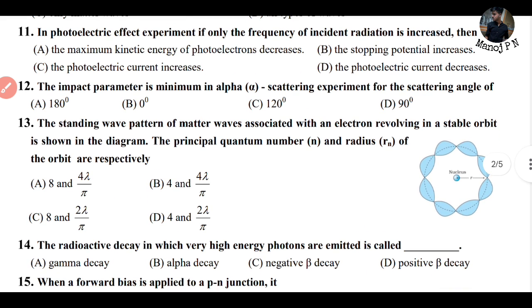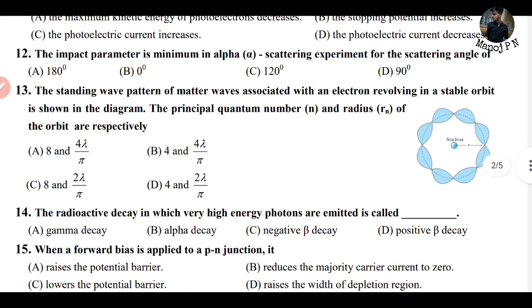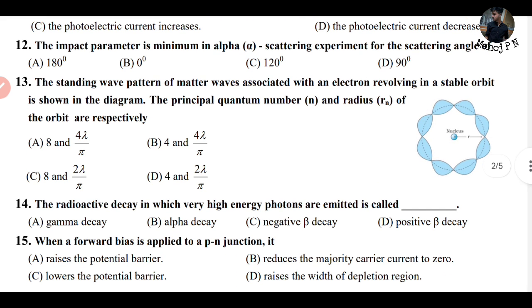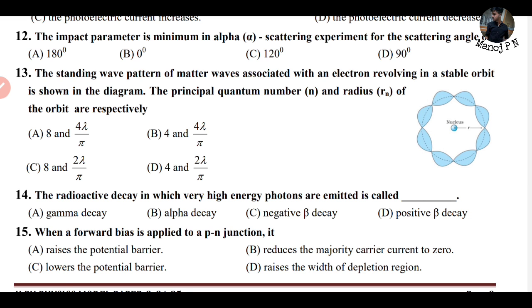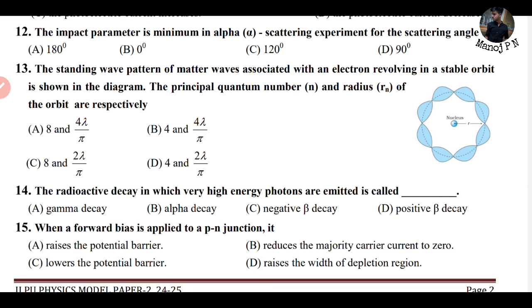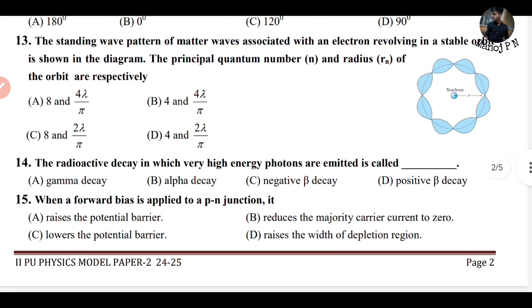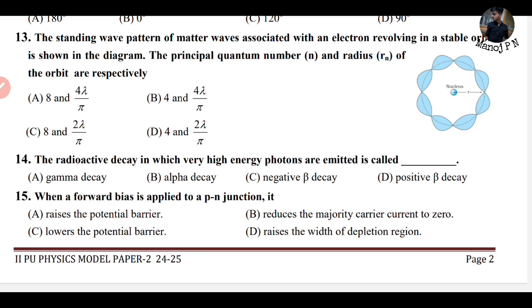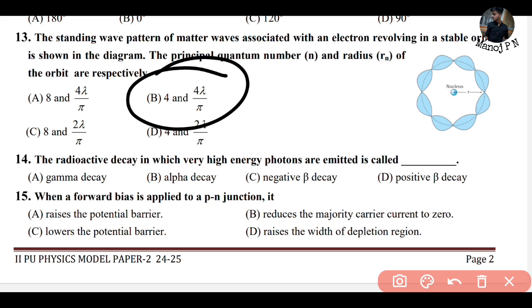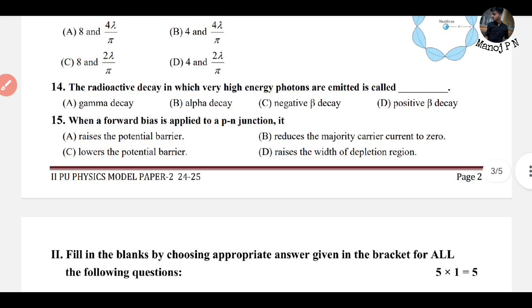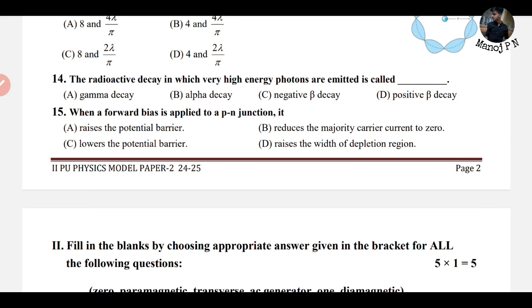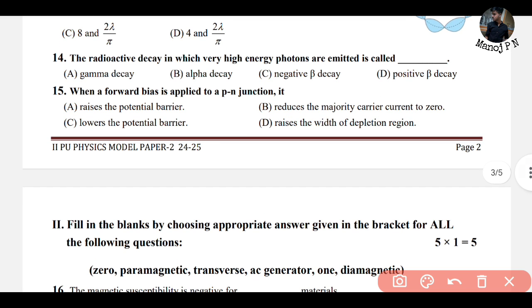Question 12: the impact parameter is minimum in the alpha scattering experiment for a scattering angle of 180 degrees — that is straightforward. Question 13: the standing wave pattern of a matter wave associated with an electron in a stable orbit — counting the loops gives n = 4, and the radius is 4λ divided by π, so option B is the answer. Question 14: radioactive decay in which very high energy photons are emitted is called gamma decay — straightforward.